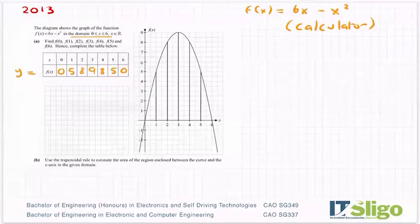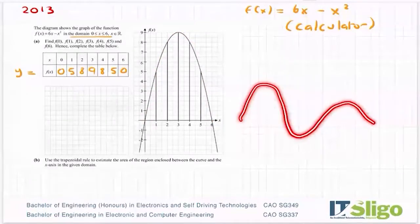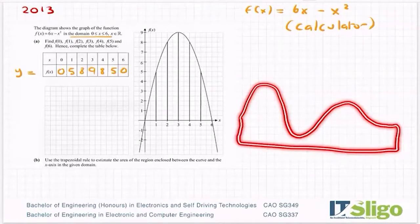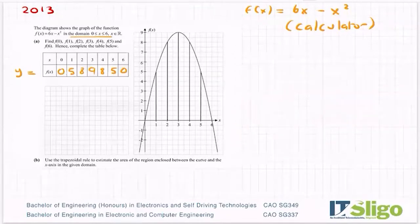Part B, use the trapezoidal rule to estimate the area of the region enclosed between the curve and the x axis in the given domain. So the trapezoidal rule is used to find the area of a curved shape normally. So you can see this shape here doesn't fall under any of our shapes, such as our squares or triangles or circles and so on. And of course, it could even be more curvy. And you could be asked to find the area of that particular shape. So anytime it's a curved shape, you could be asked to use the trapezoidal rule to estimate the area of it. And the word estimate, why did they do that?